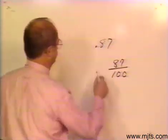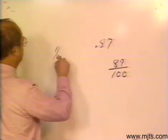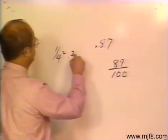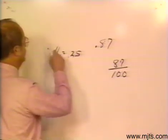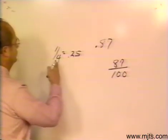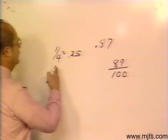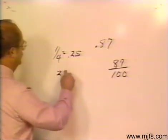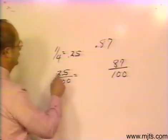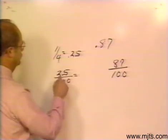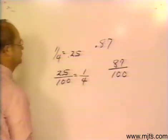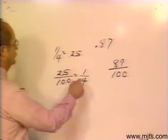For example, 1 fourth is equal to 0.25. If I take 4 into 1, I'll have 0.25. To convert it back to the fraction, I would put 25 over 100. I can reduce that by dividing 25 into both the numerator and denominator. 25 goes in once and 100 divided by 25 is 4, so I'm going right back to the fraction of 1 fourth.